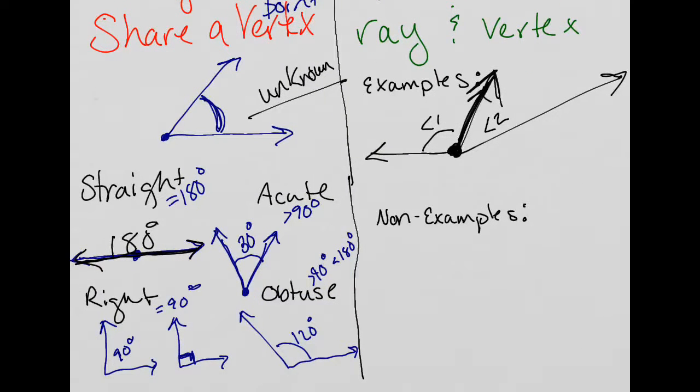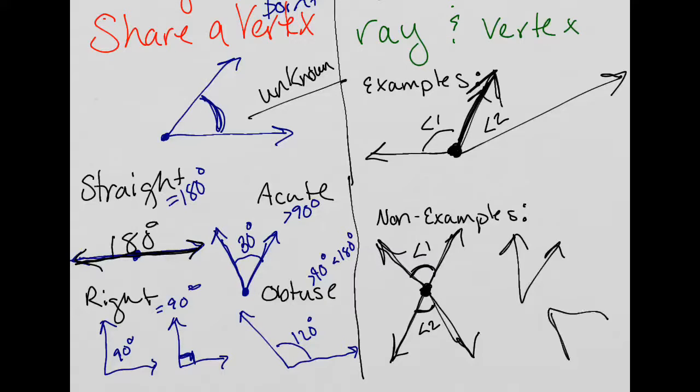Non-examples would be this angle here, angle one, and this angle here, angle two. They do share a point. But angle one's rays go top right and top left, versus angle two goes to the bottom left and bottom. So they only share a point or vertex. So those are non-examples. Another one would be two angles that just aren't connected in any way, shape, or form.